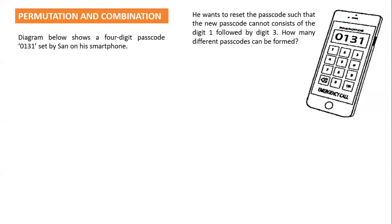Hi students, nice to see you again. In this video I would like to explain a question from the chapter Permutation and Combination. This is a question from SPM 2019, requested by a few students. The diagram below shows the four-digit passcode 0131 set by a student on his smartphone.